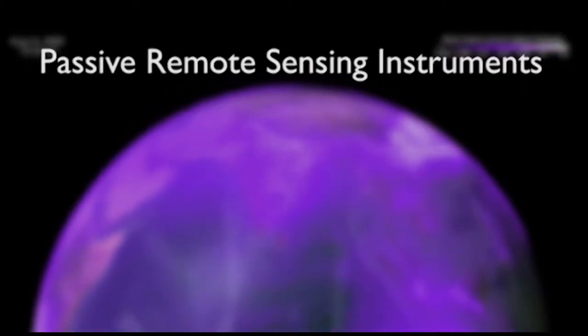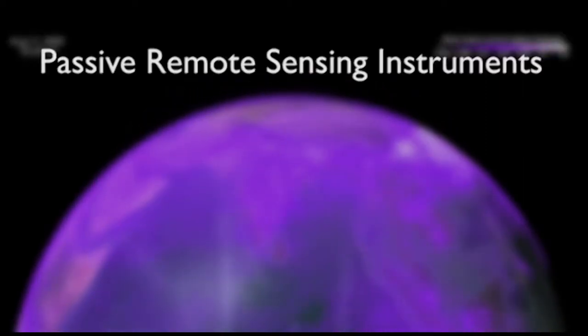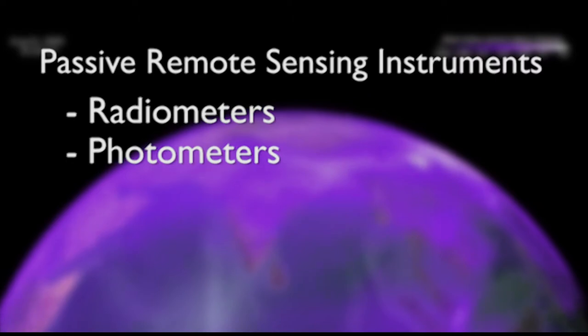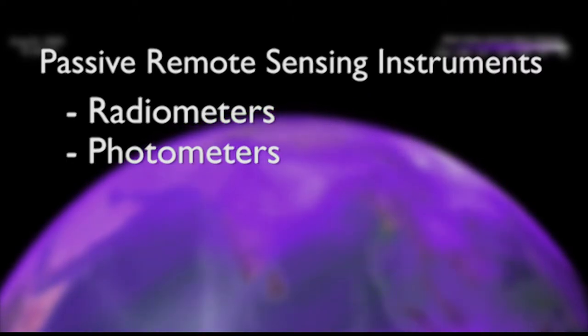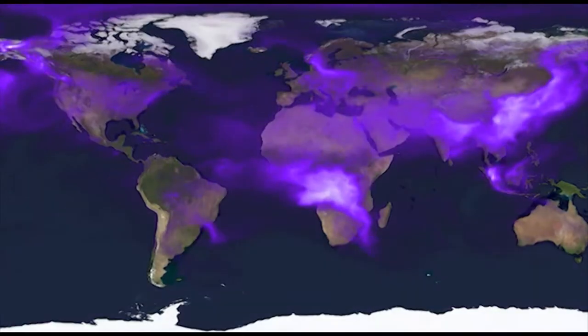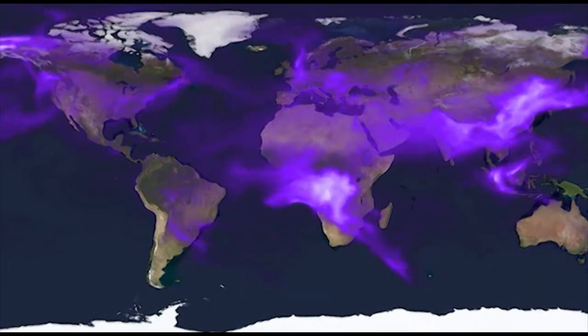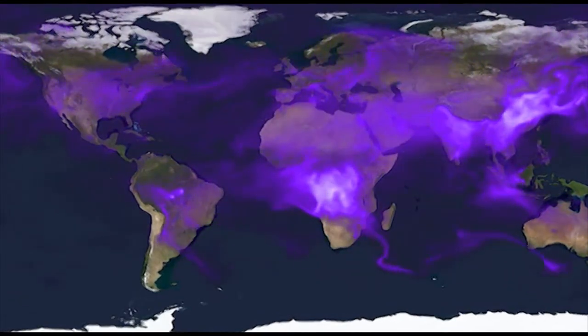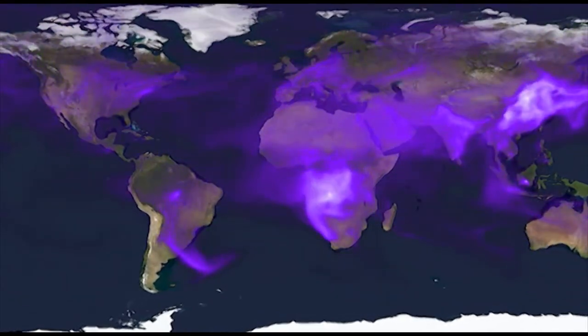Passive satellite remote sensing instruments, such as radiometers and photometers, are the most common. These types of instruments can provide near-global daily coverage of atmospheric pollutants and chemical data.